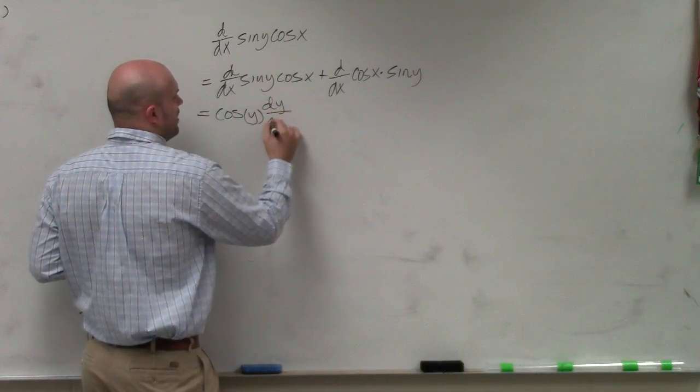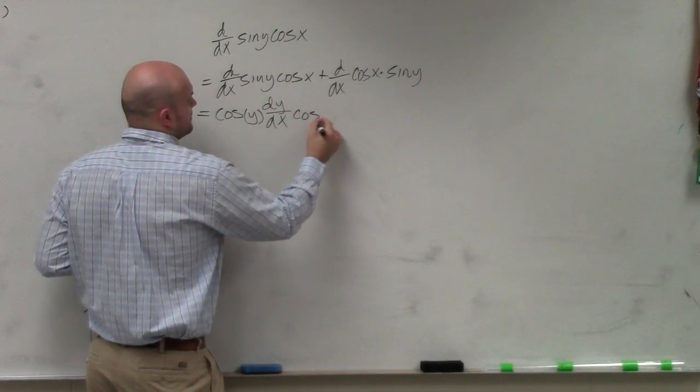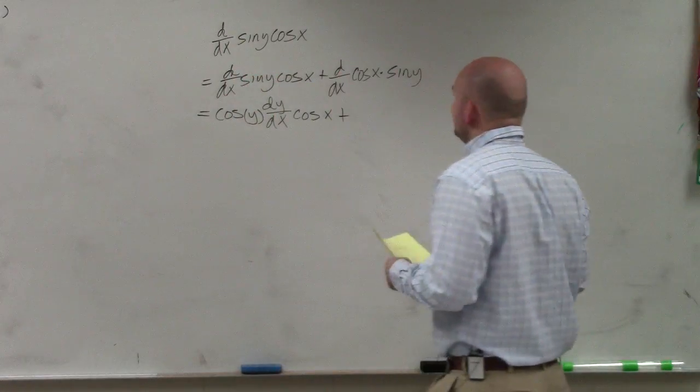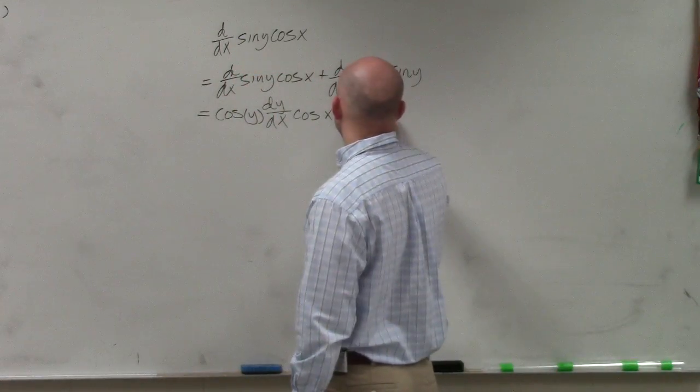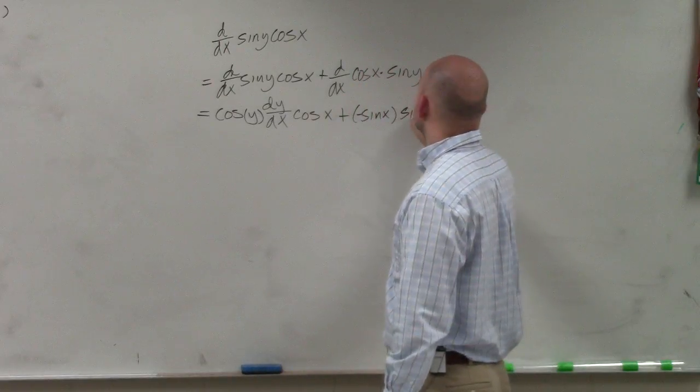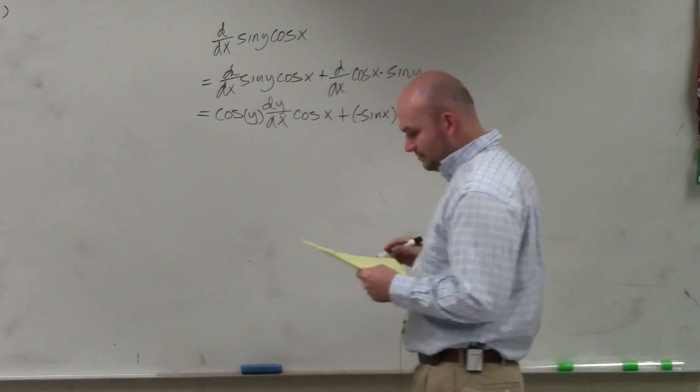We took the derivative of y with respect to x times cosine of x plus d over dx of cosine of x is going to be a negative sine of x. And then we have times sine of y, which is out there.